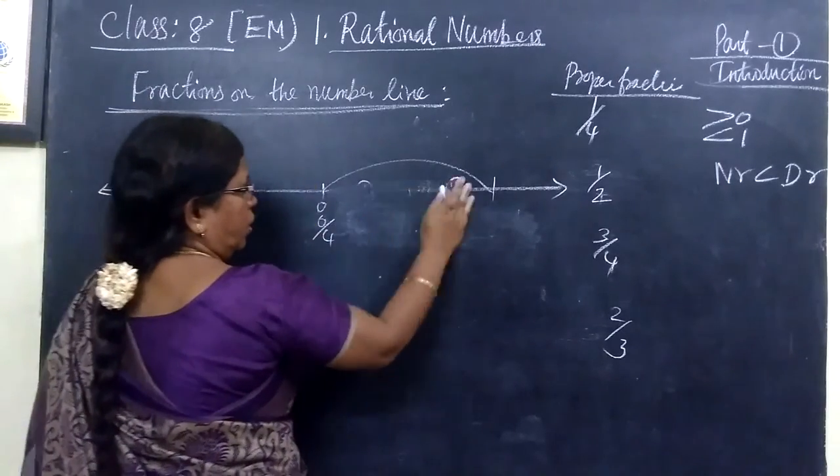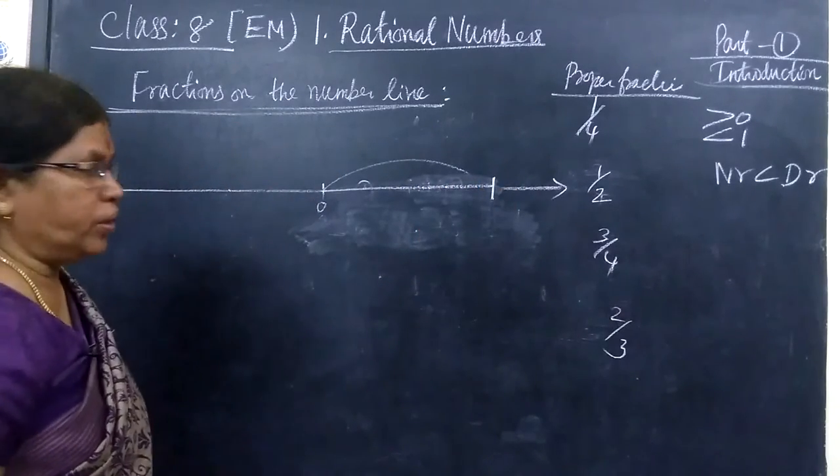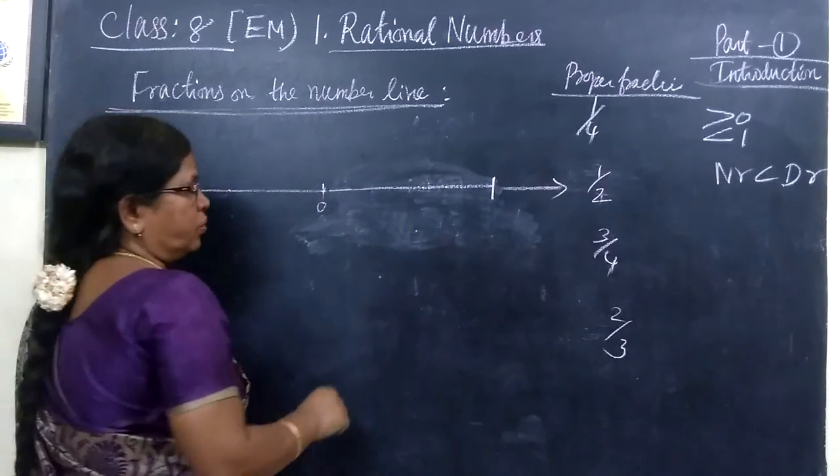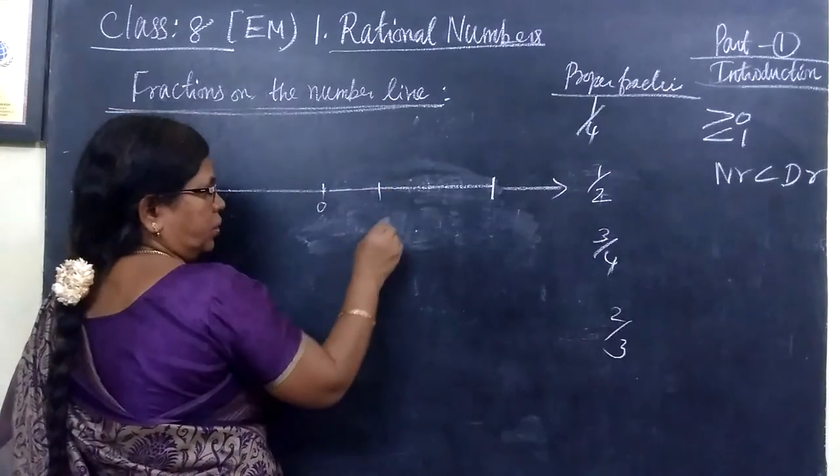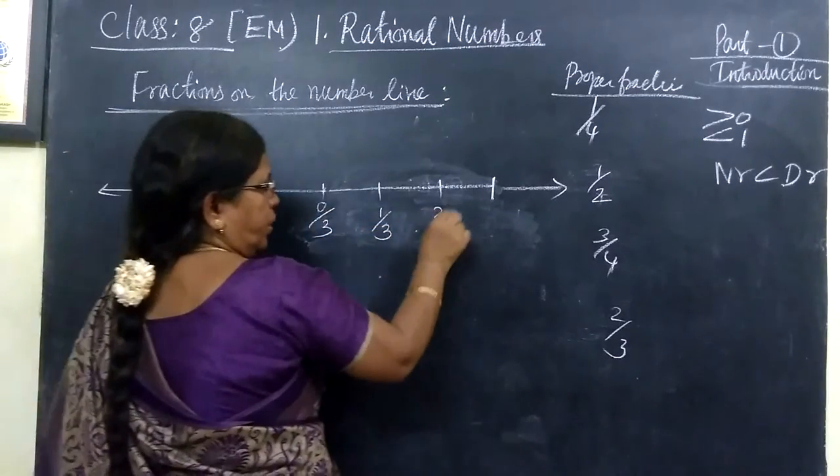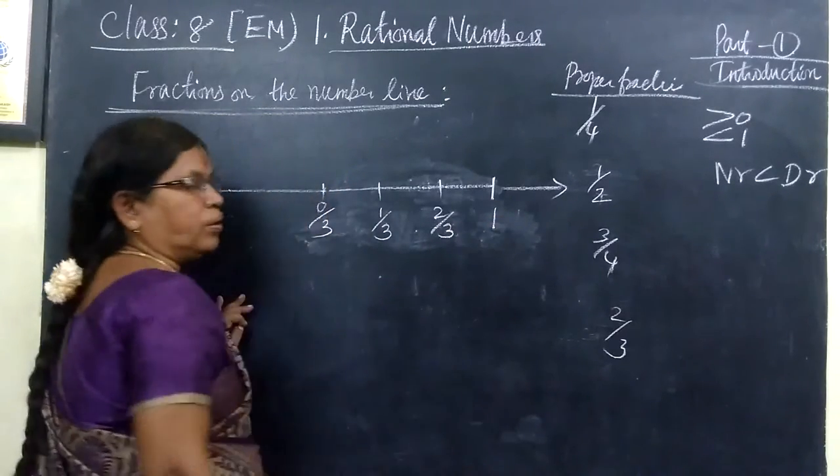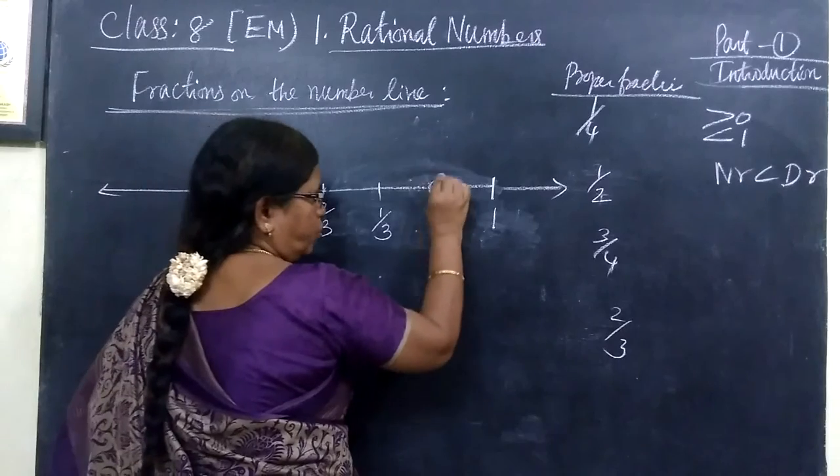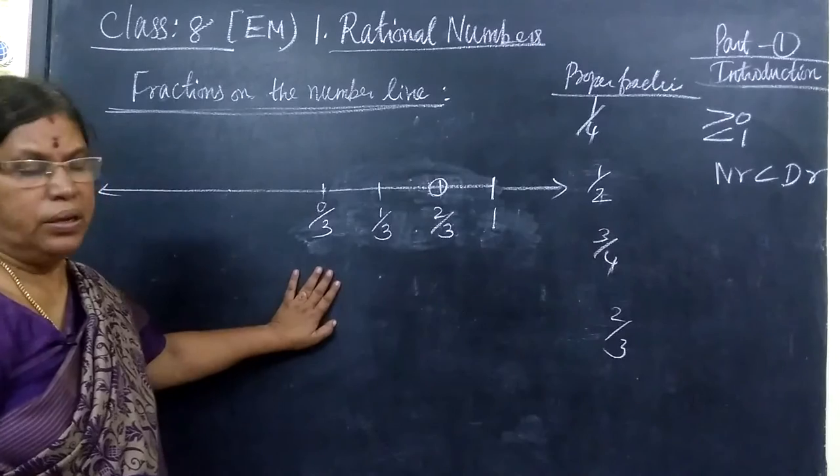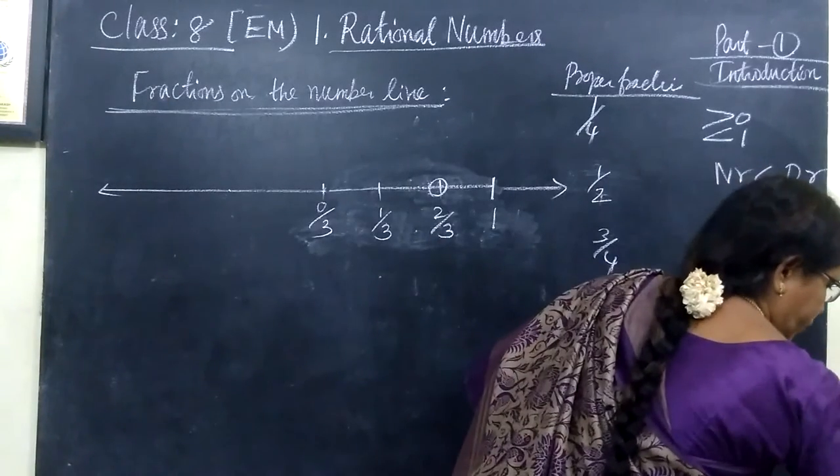So now I divide the distance between 0 to 1. The distance from 0 to 1 into 3 equal parts. So this is in this way we are marking. So this is 0 by 3, 1 by 3, 2 by 3, 3 by 3 and 3 by 3 is nothing but 1. So where is 2 by 3? 2 by 3 is at the middle between 1 by 3 to 1. So in this way we are marking fractions on the number line. This is only very simple method only.